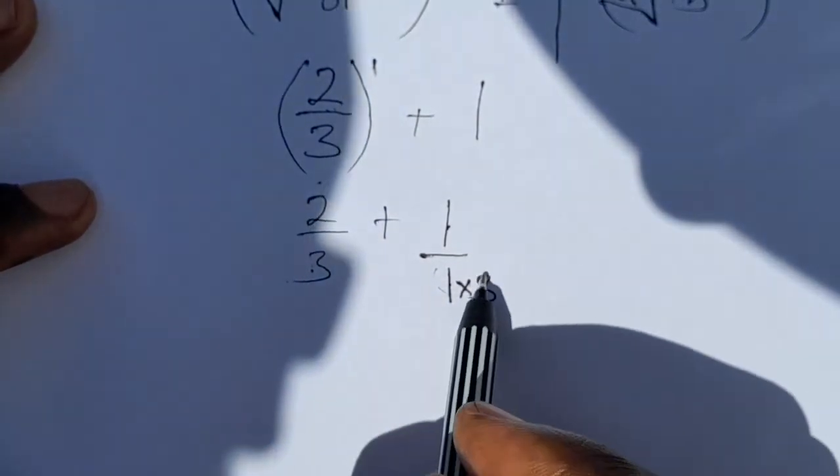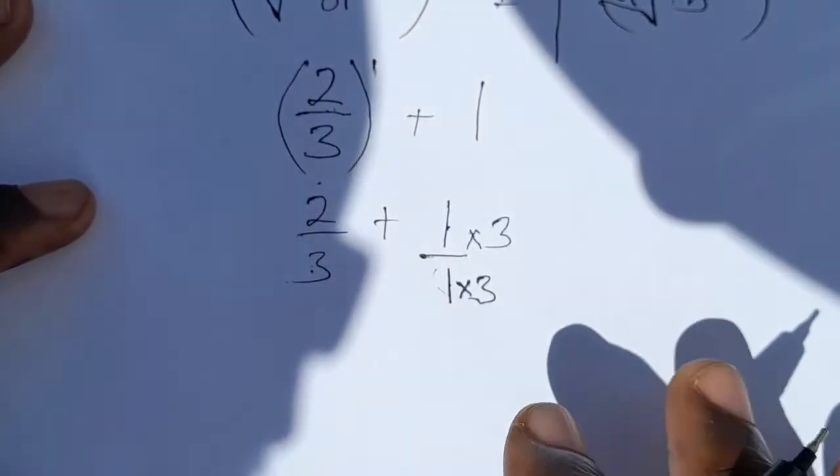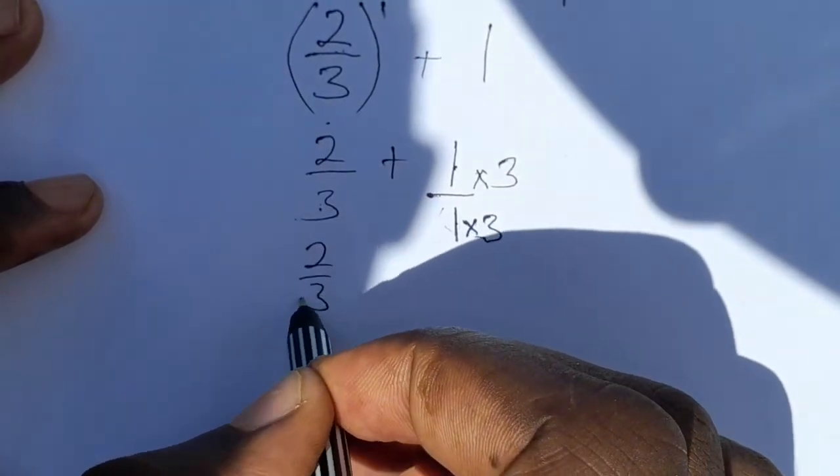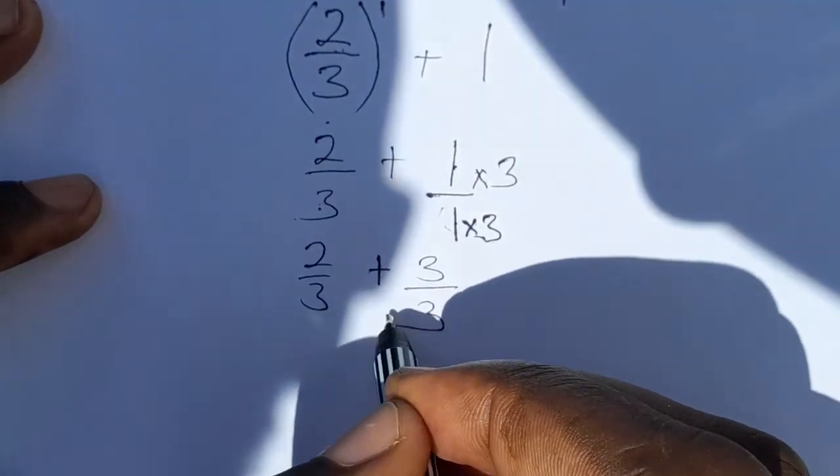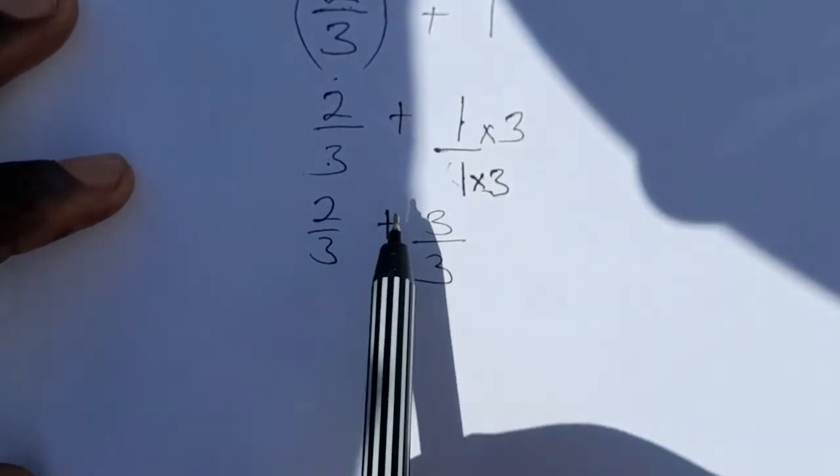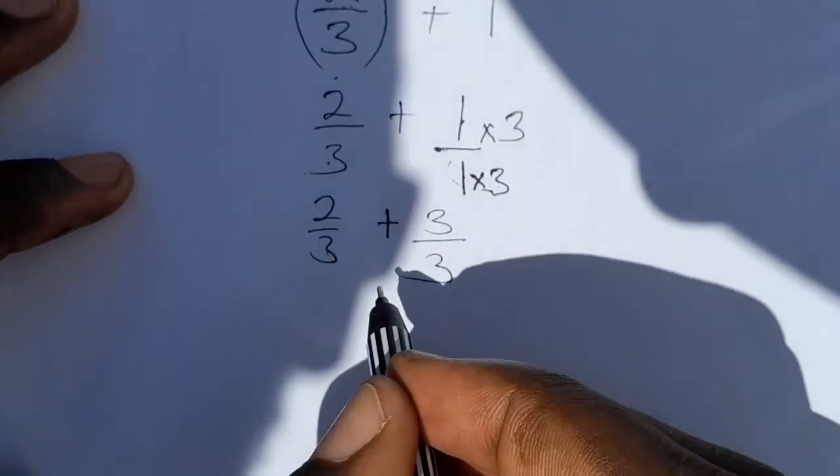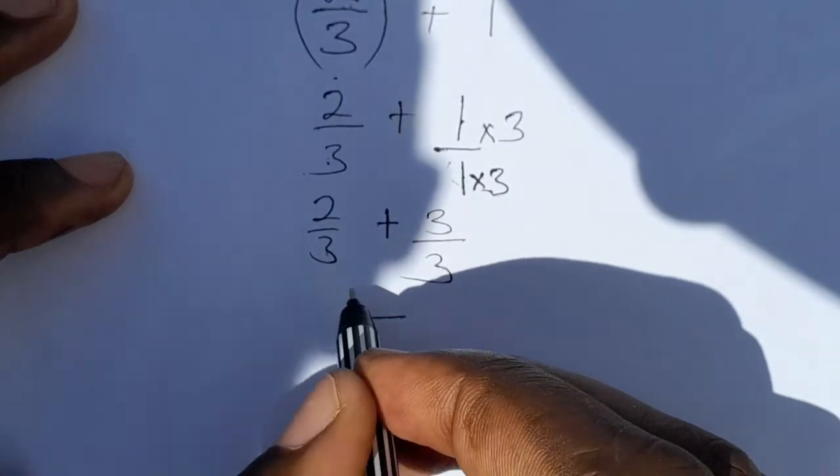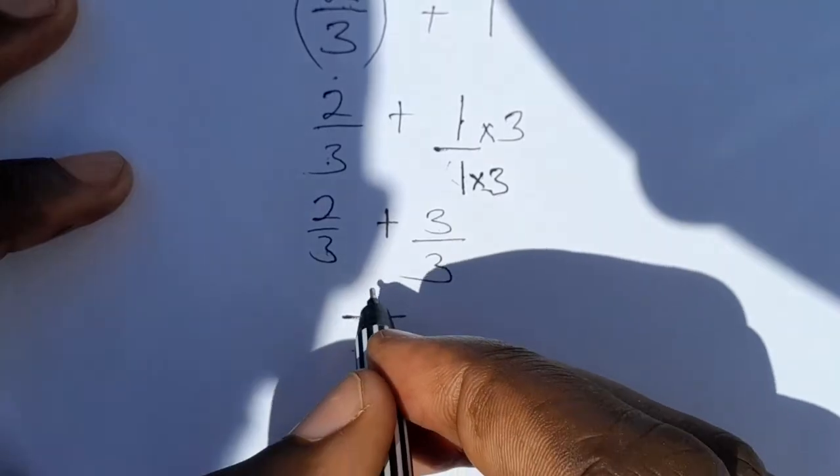What you've done on the denominator you also do it on the numerator so that the value remains the same. So you're going to have 2 over 3 plus 1 times 3 is 3 over 3. So at this stage, because you have the same denominator, then it means this fraction can be added directly. So you're just going to pick one of the threes, then 2 plus 3 is 5.